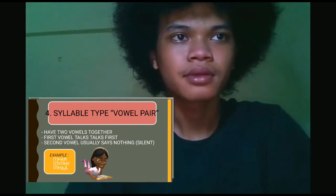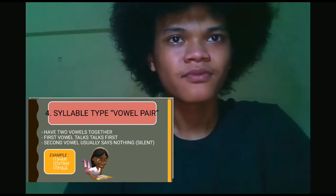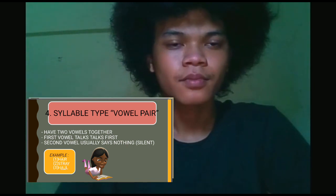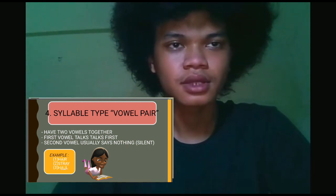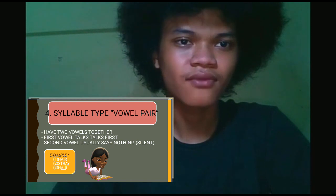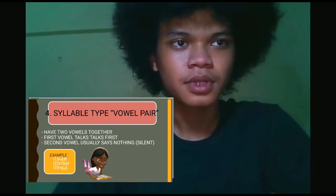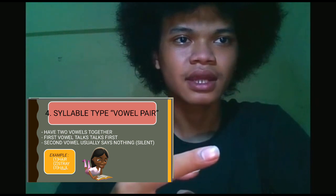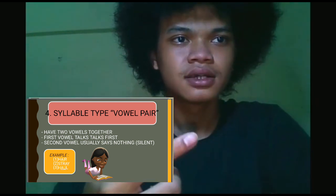Assalamualaikum warahmatullahi wabarakatuh. My name is Iqbal Nurhidayah, and I want to explain about syllable types. The first one is vowel pair. Syllable vowel pair is a syllable that has two vowels together, and the first vowel talks first, then the second vowel is usually unvoiced, so it means silent. For example: hair, stray, and howl.